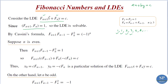So this LDE is solvable, because fn+1 and fn are relatively prime. We have Theorem 3.19, which states that if GCD of A and B equals 1, that is if A and B are relatively prime, then this LDE is solvable and has infinitely many solutions. By using Theorem 3.19, this LDE is solvable.